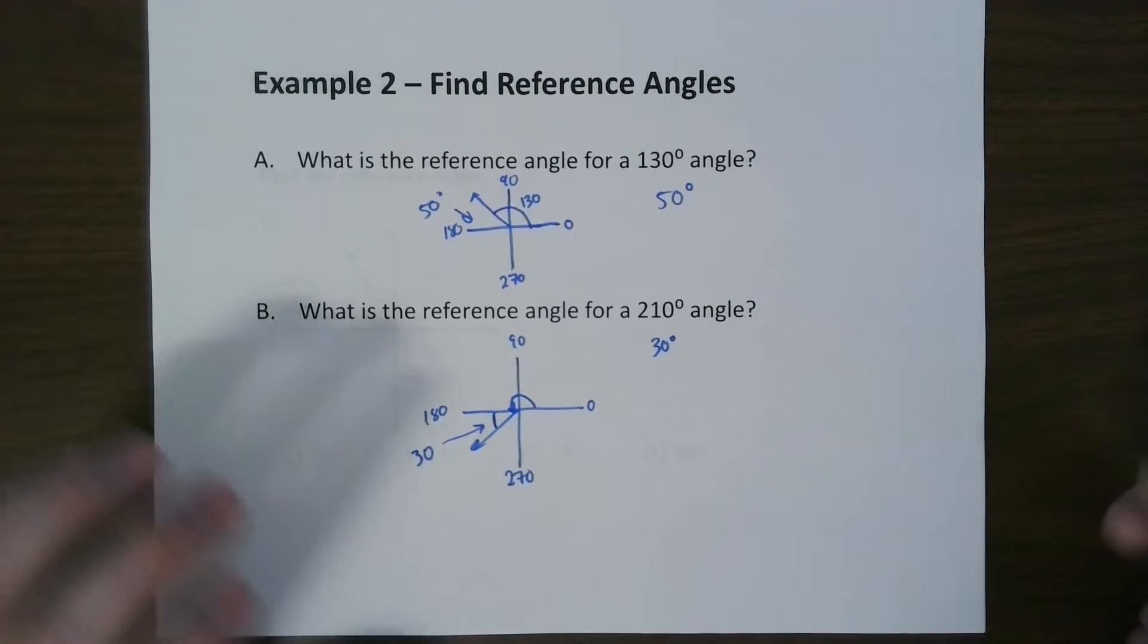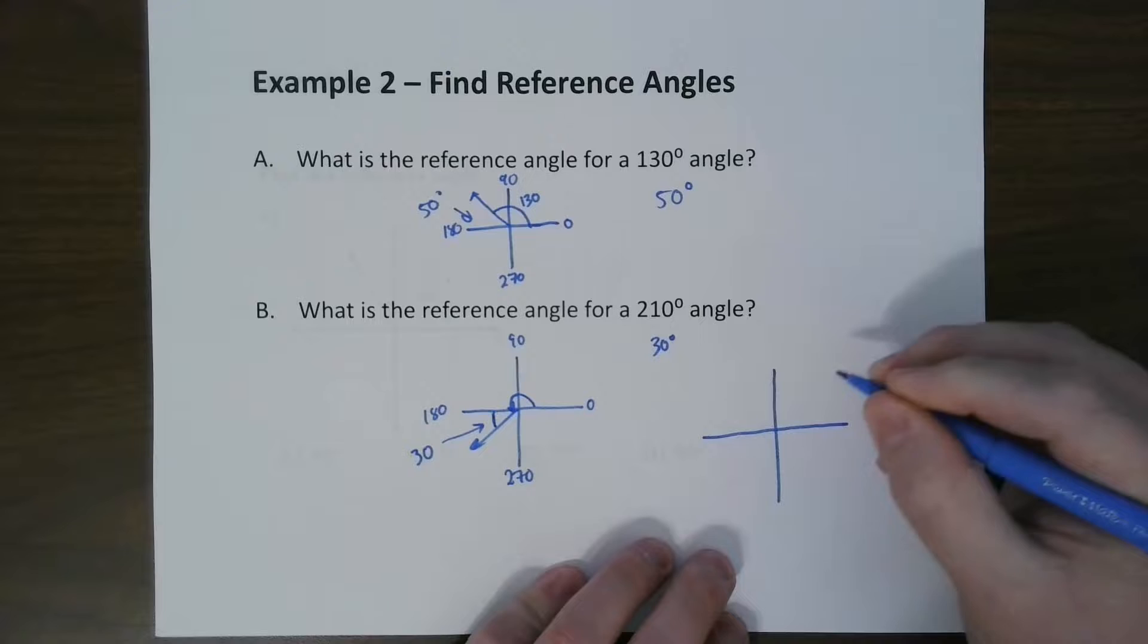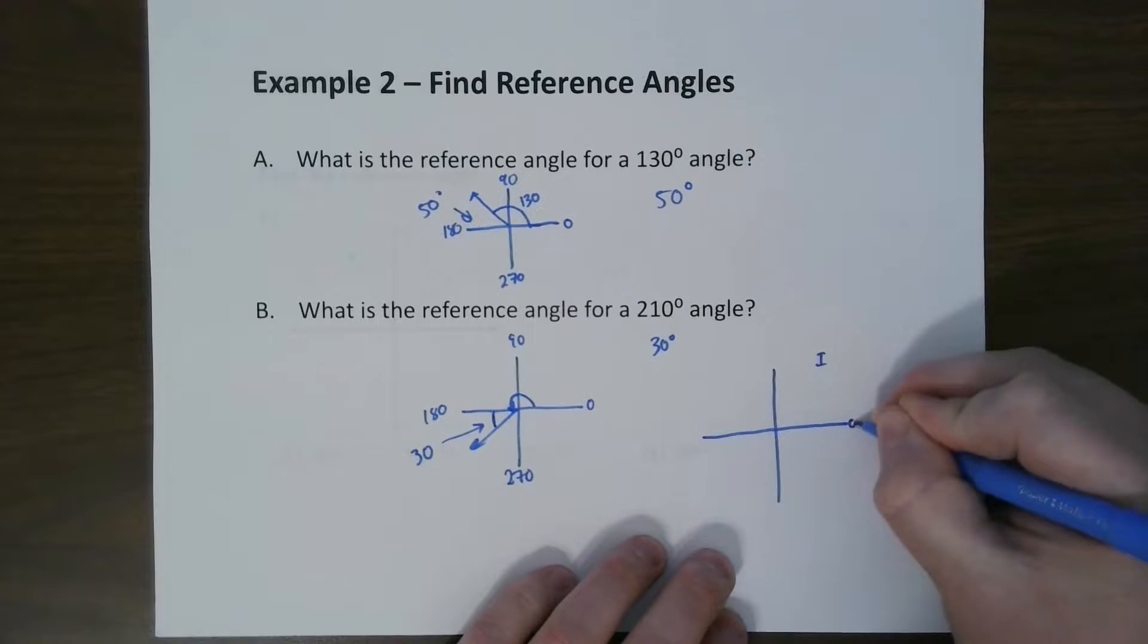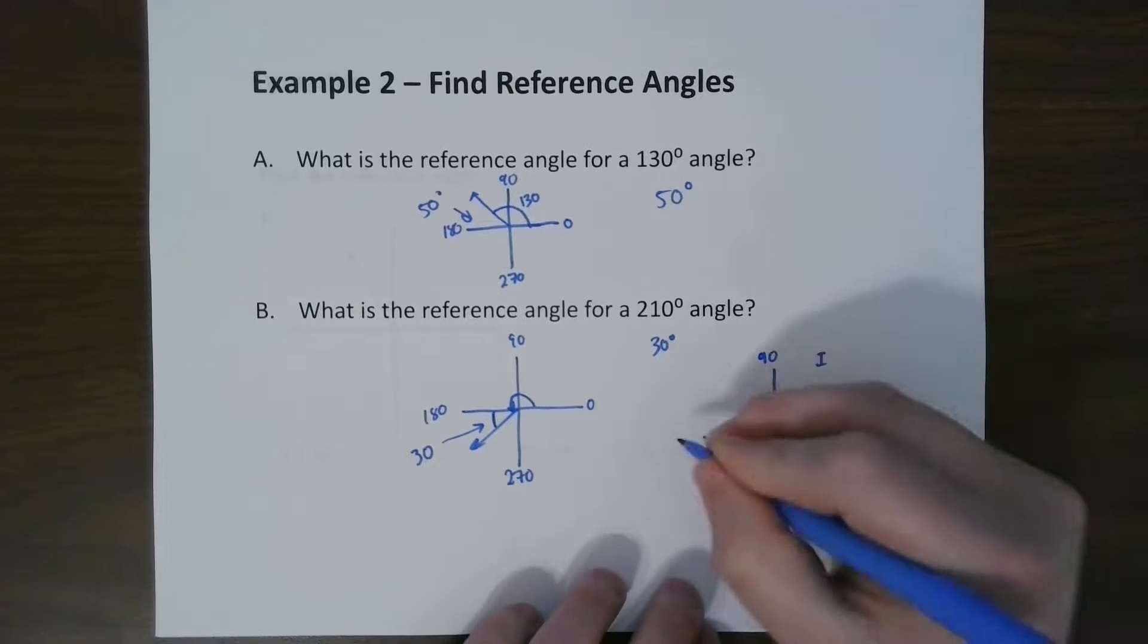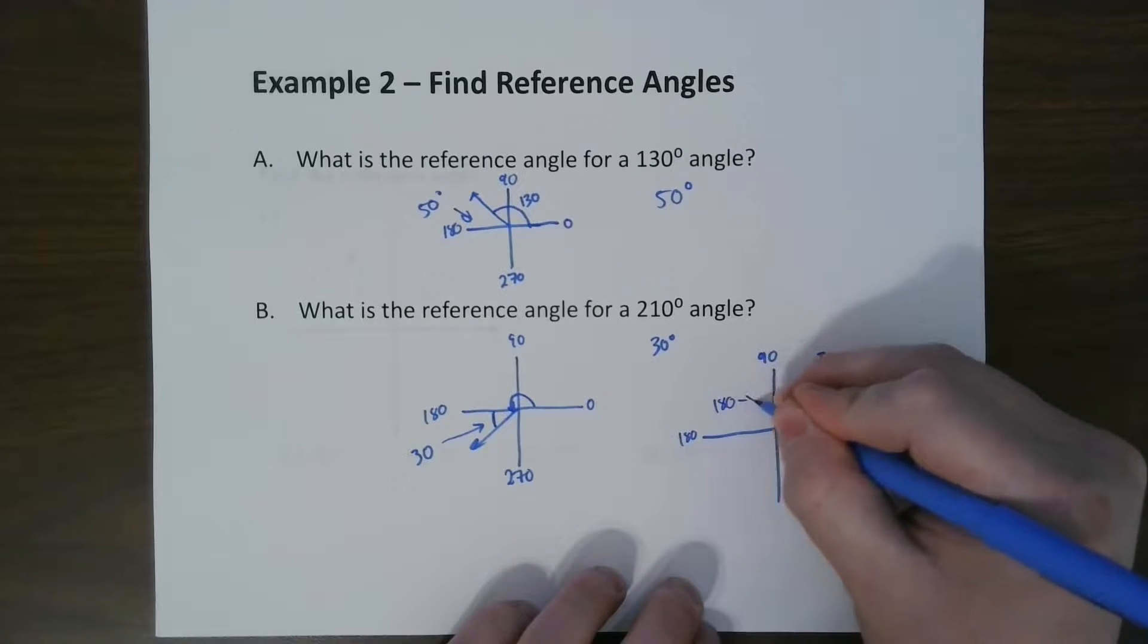So in general, if you want just a nice little reference table, whatever angle is given, if it's in quadrant one, this one, it's the same. I'm going to call that angle x if you will. If it's in this angle, we go 180 minus x.